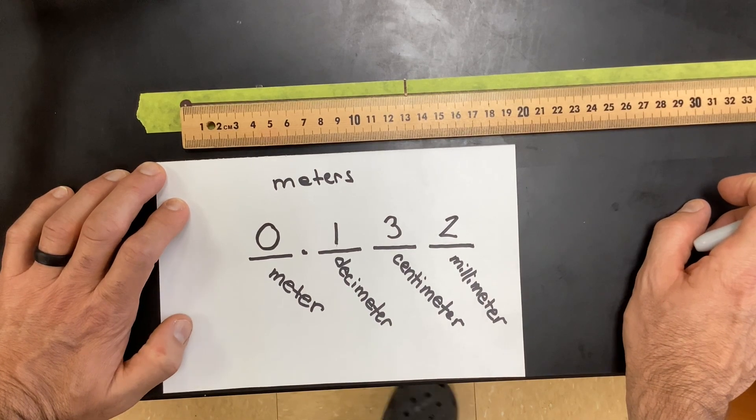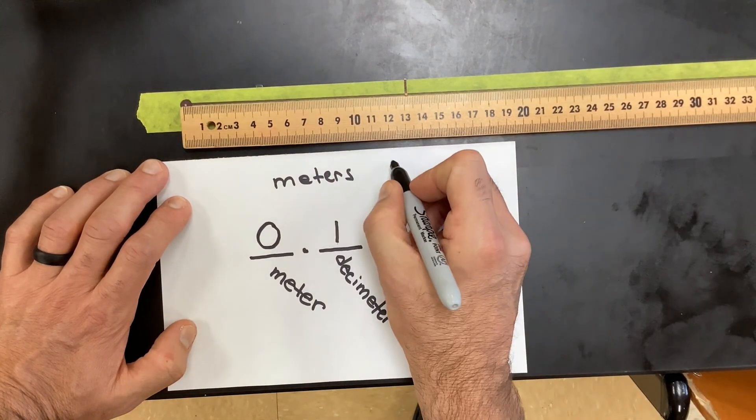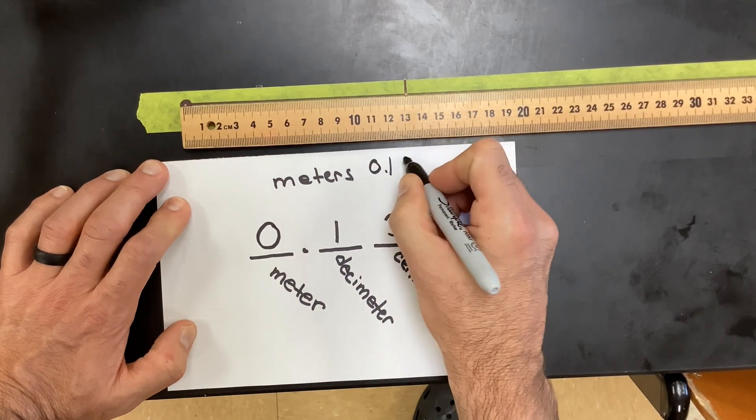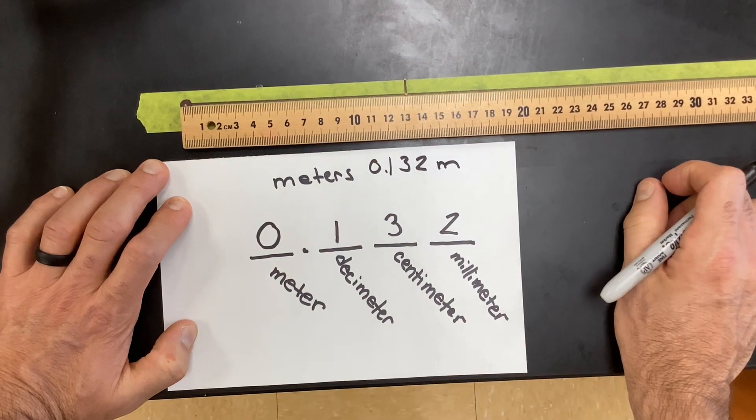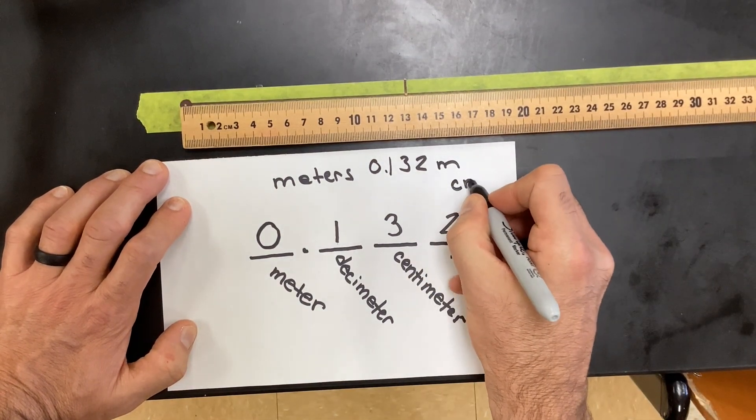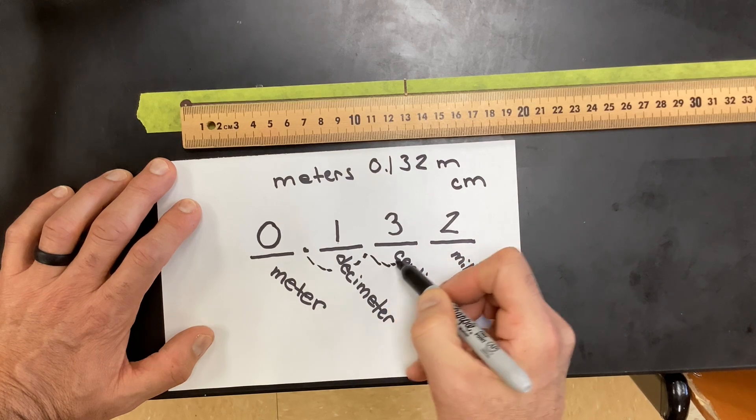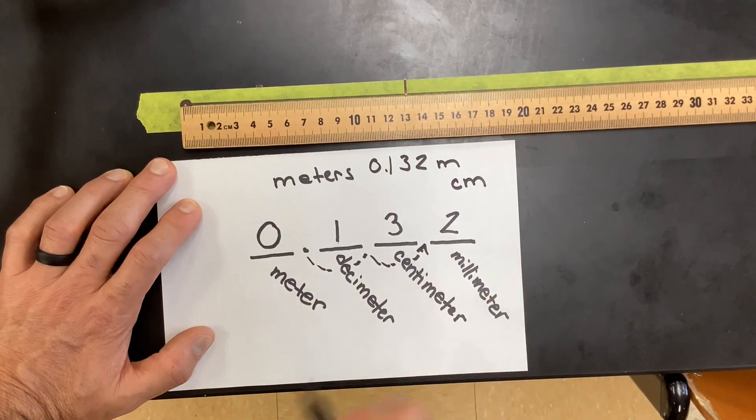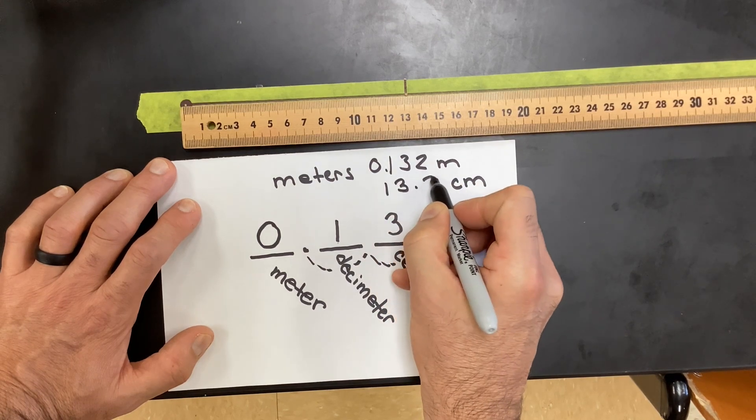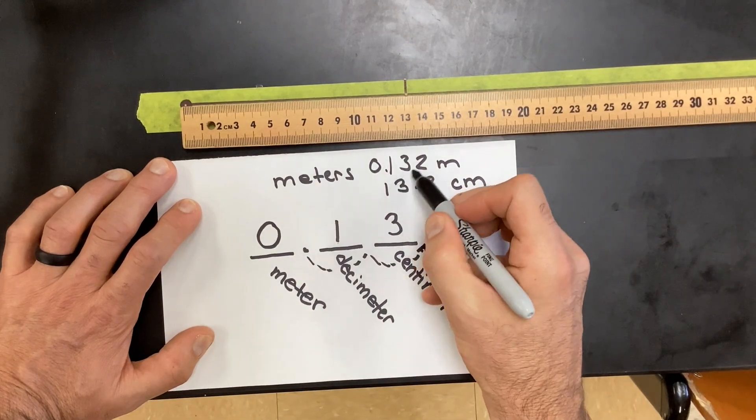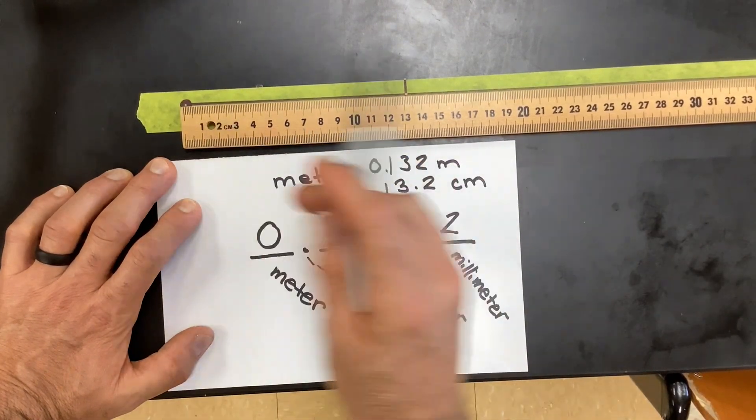Now if I wanted to write that out on paper, I'd put my 0.132 and I'd put meters because I'm measuring that in meters. If I want to change this into centimeters, all I have to do is hop that decimal over two spots. So in centimeters it would just be 13.2, and I just moved the decimal over twice. Either one of these is perfectly accurate and it means the exact same distance.